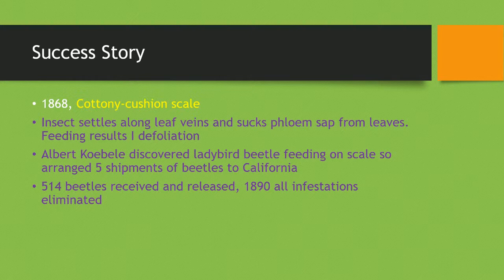In 1868, the Cottony Cushion Scale involved insects that settled along leaf veins and sucked the flowing sap from the leaves, resulting in defoliation. Albert Koebele discovered that the ladybird beetle would feed on the scale and raised five shipments of these beetles to California. 514 beetles were received and released.